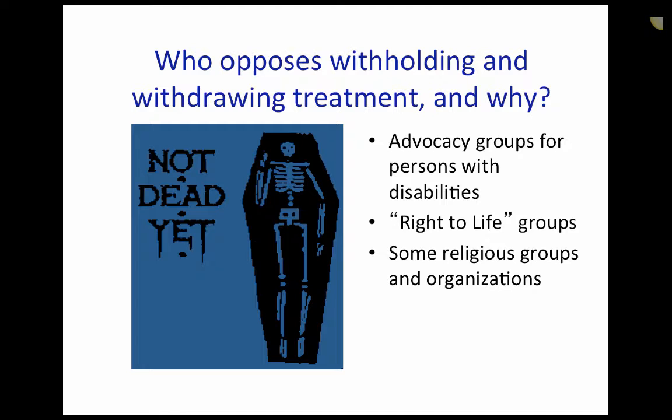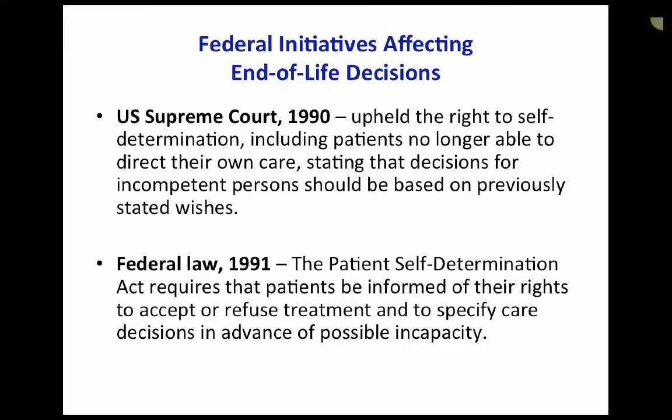Let's review the federal initiatives affecting end-of-life decision-making. In 1990, the U.S. Supreme Court upheld the right to self-determination, including patients no longer able to direct their own care, stating that decisions for incompetent persons should be based on previously stated wishes. And then we have the federal law in 1991, the Patient Self-Determination Act, which requires that patients be informed of their rights to accept or refuse treatments and to specify care decisions in advance of possible incapacity.